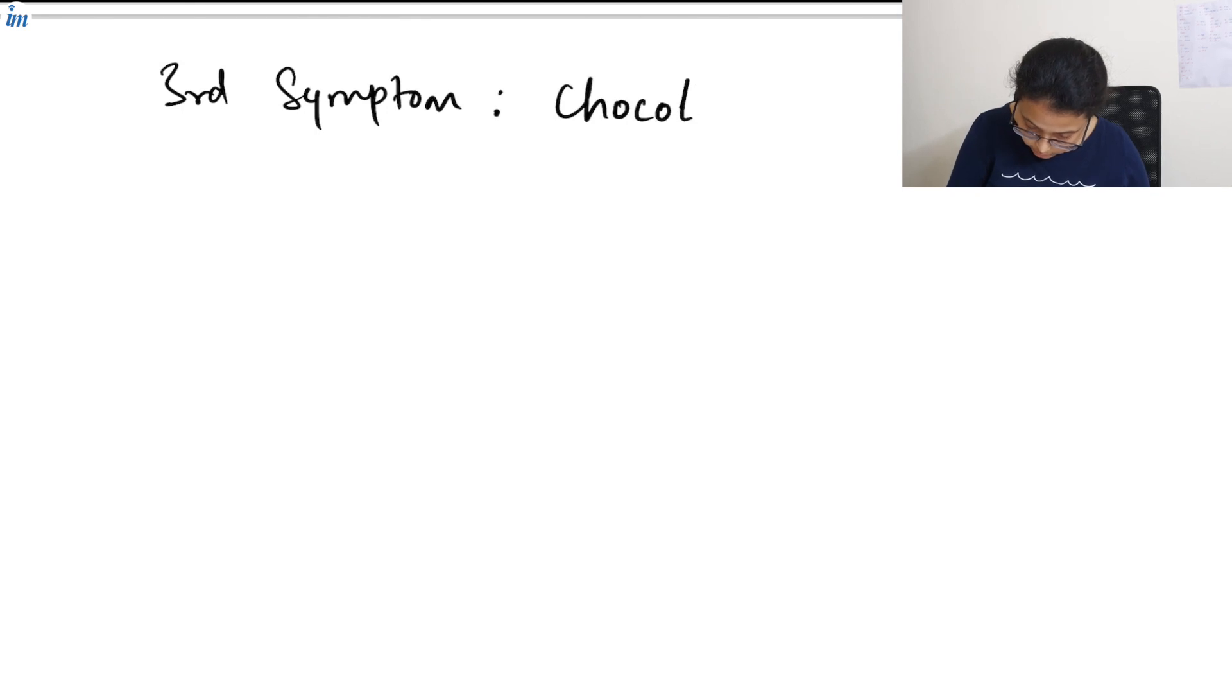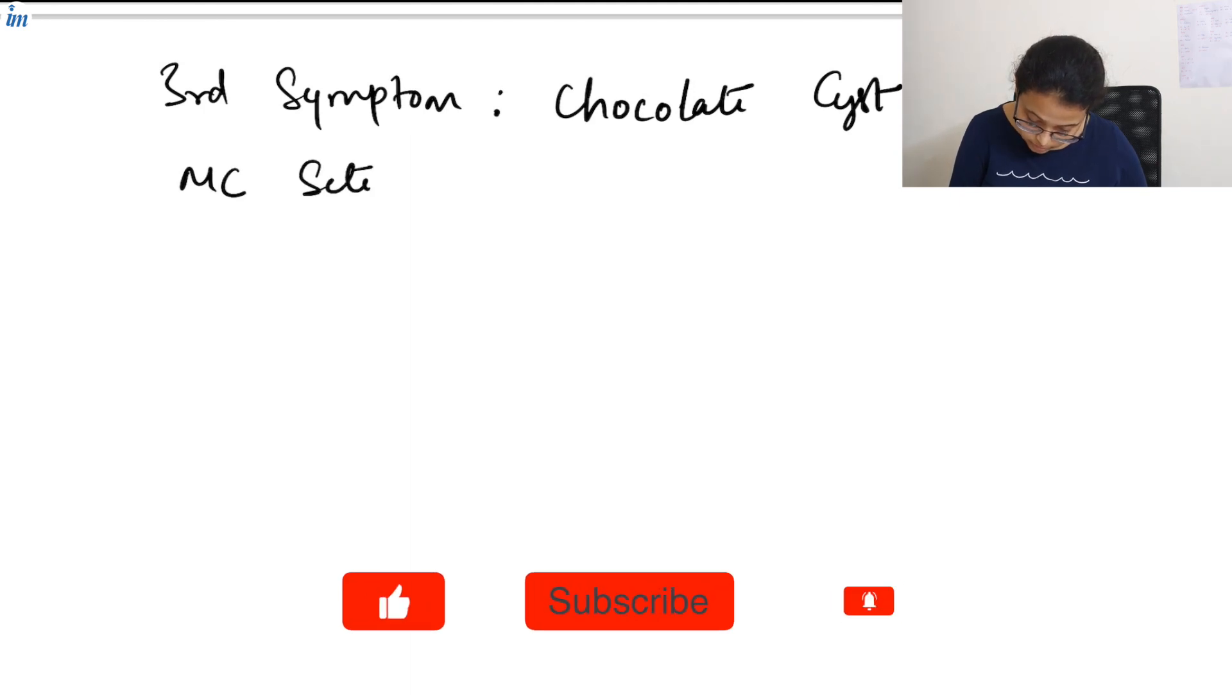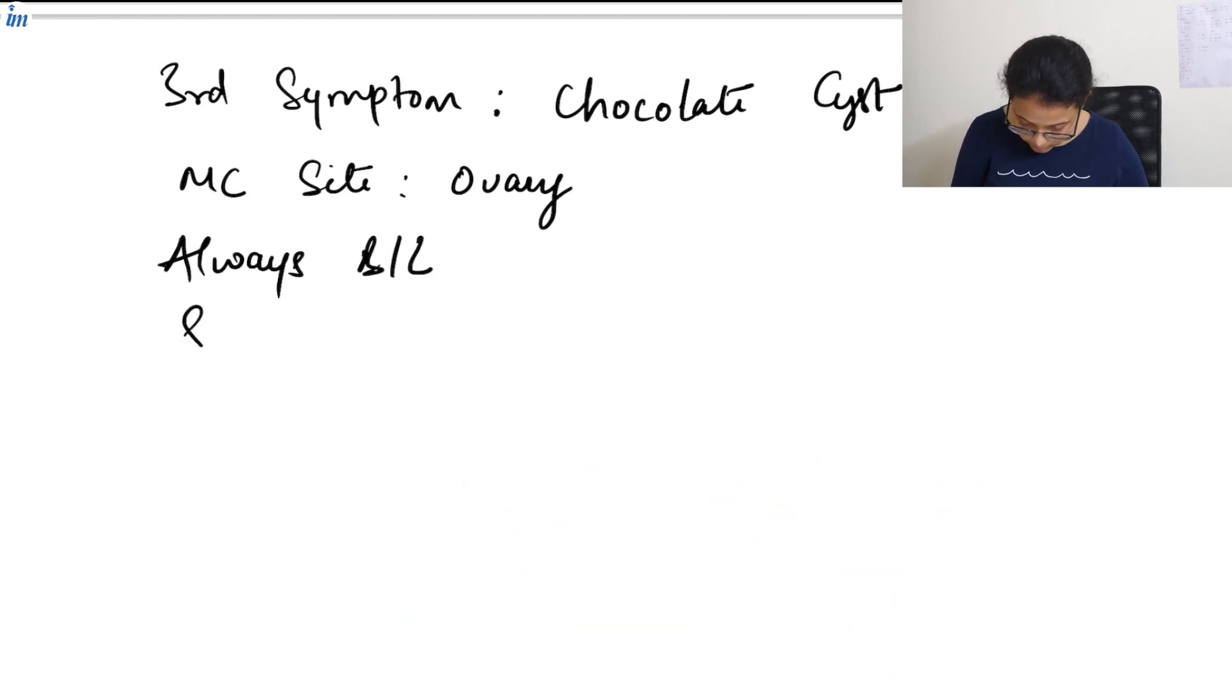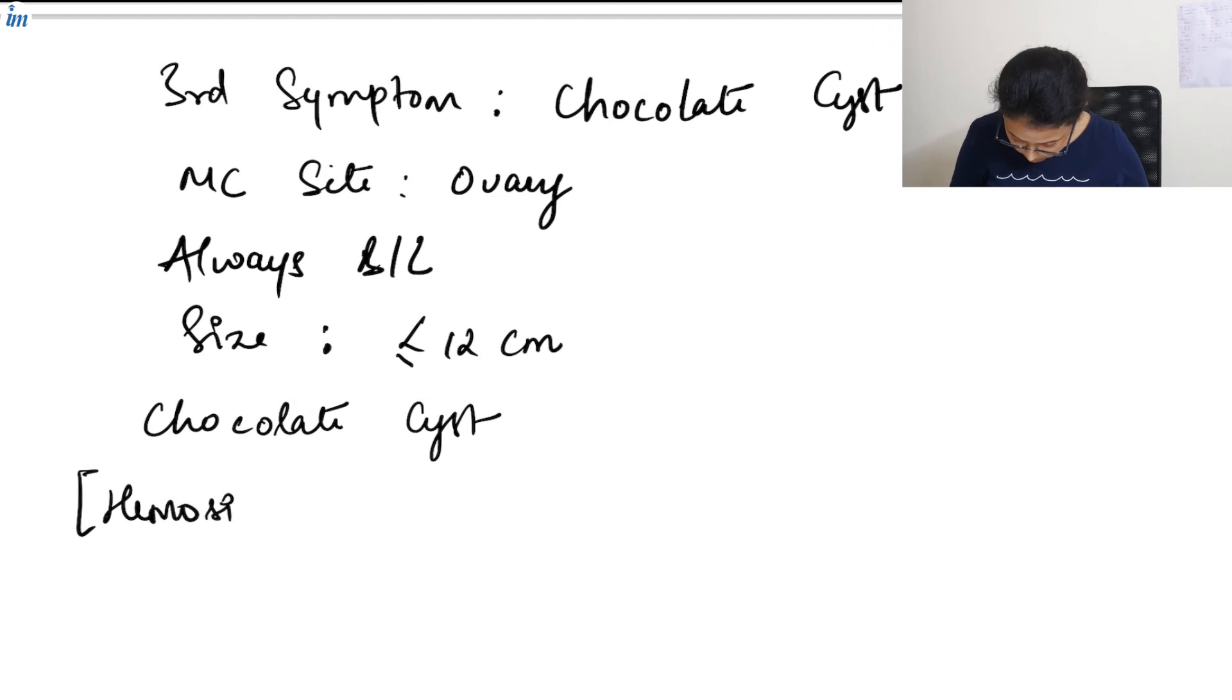Now third symptom is chocolate cyst. Chocolate cyst, most common site for it is the ovary, it's always bilateral. The size is less than or equal to 12 centimeters. Now the chocolate cyst consists of hemosiderin, tarry blood, and pseudoxanthoma which is the granulation tissue.